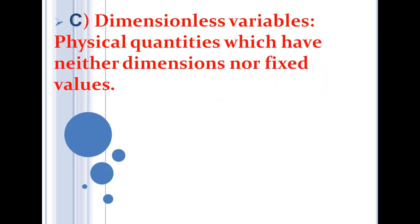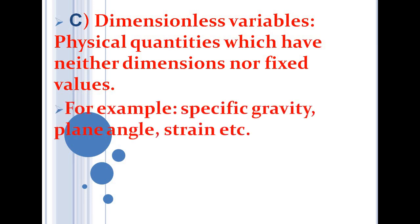The third type is dimensionless variables. From the name it is clear they must be variables with no fixed value and they also have no dimension — no dimension and no fixed value. Such physical quantities are called dimensionless variables. For example, specific gravity has no dimension but its value varies from material to material. Similarly, plane angle and strain are dimensionless variables.